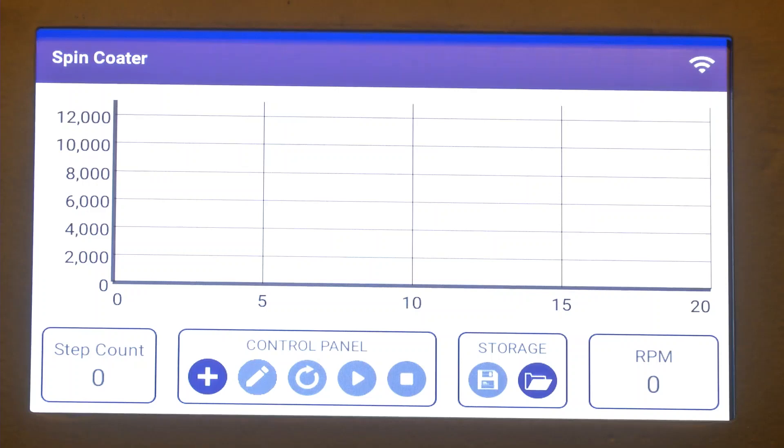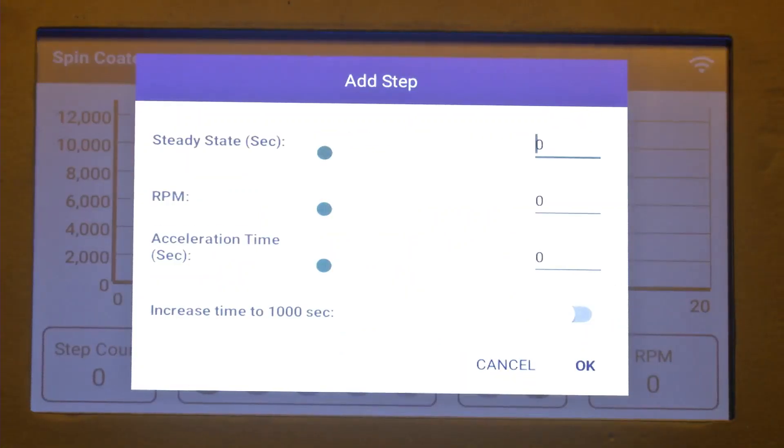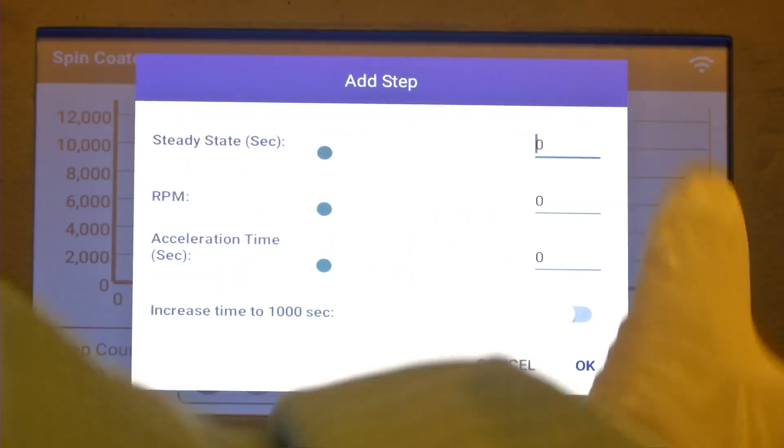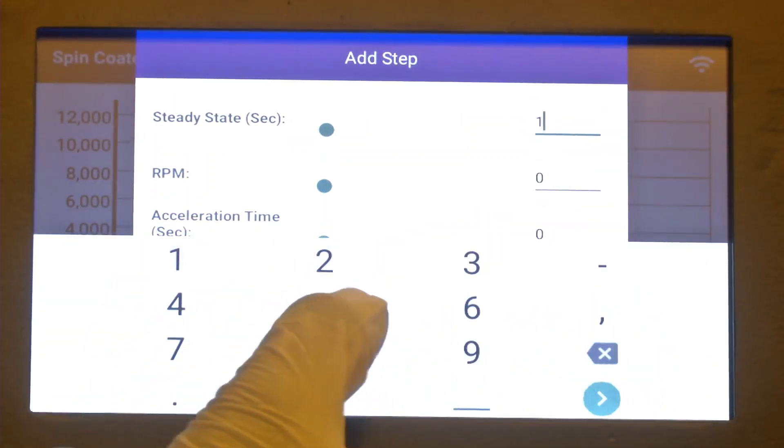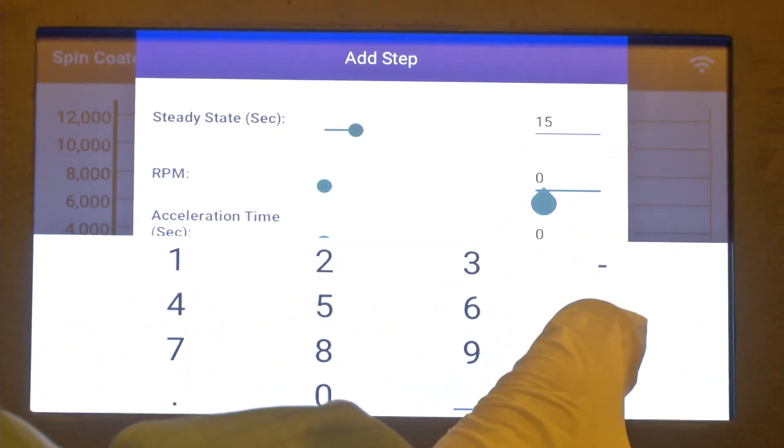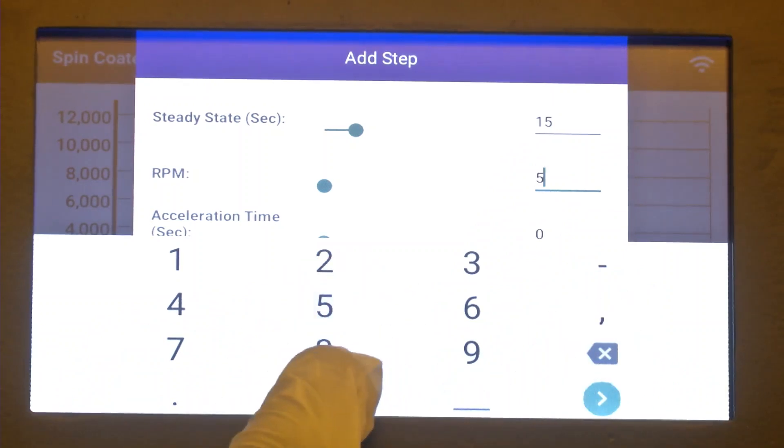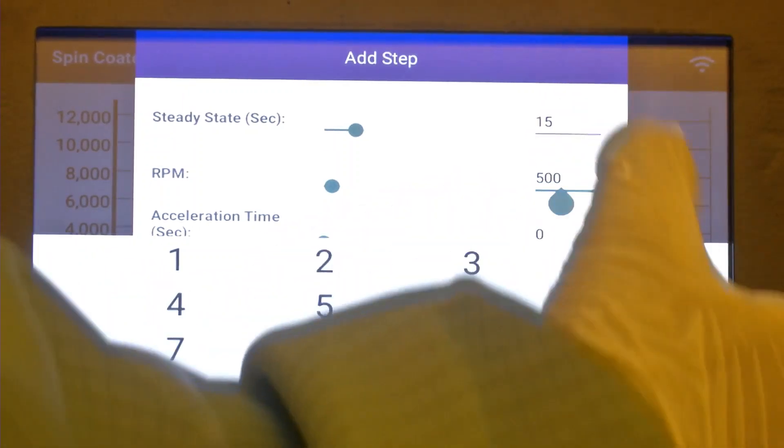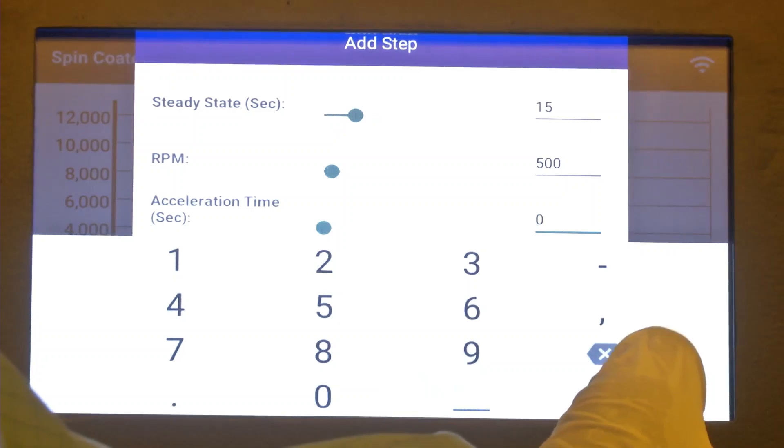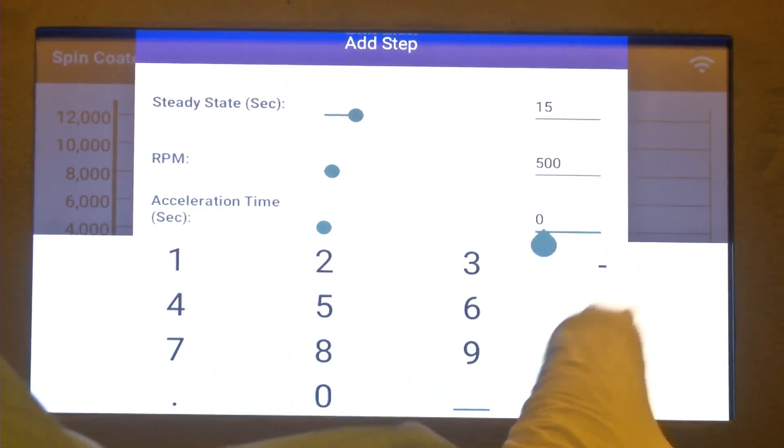Now we will see how we can program a spin coater. We need multiple steps for spin coating. Generally when we spin coat polymers or photoresist, we give two speeds. One speed is to spread the solvent along with the precursor, and the second speed is to dry off the solvent and thin it down. As of now we have given 15 seconds of rotation at 500 RPM for the first step. This will spread the precursor uniformly on the surface.